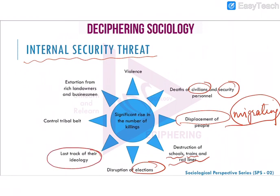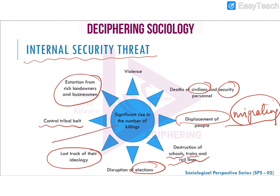The Naxalites have also disrupted elections and have somehow lost track of their original ideologies. They started with demands for equal rights, equity, and justice for the underprivileged and downtrodden. But now they have turned violent, controlled tribal belts, and resorted to extortion from rich landlords as well as businessmen. Day by day, the number of killings has been rising.